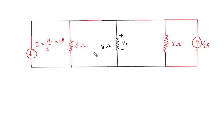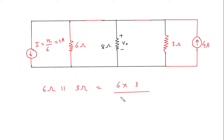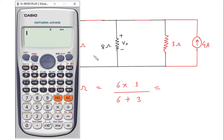Now as we can see, 6 ohm parallel with 3 ohm. So this is equal to 6 into 3 by 6 plus 3, so this is 2 ohm.